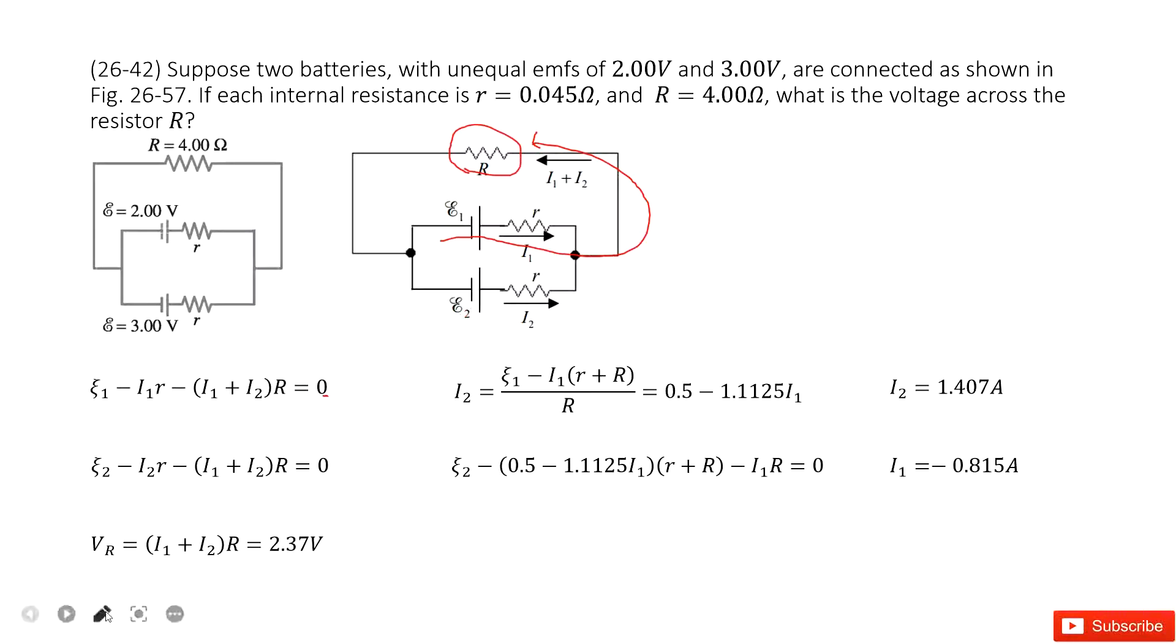And also, we can get the second loop from epsilon 2 to I2 to R. So this one, we can see, this is the battery, the EMF epsilon 2, increasing the voltage.